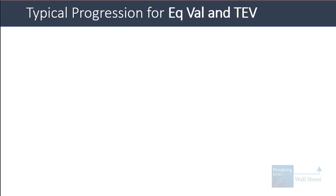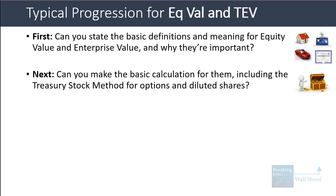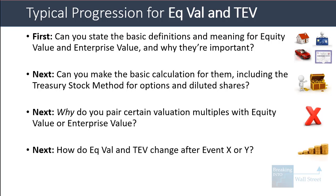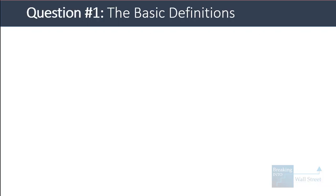The typical progression of questions starts with basic definitions and meanings of equity value and enterprise value and why they're important. Then they might ask about basic calculations, including the treasury stock method for diluted shares. They might ask about valuation multiples and how to pair equity value or enterprise value to create multiples. A more difficult category is how equity value and enterprise value change after certain events like issuing dividends, making acquisitions, or purchasing PP&E. Finally, they might ask about real-life events and how those affect equity value and enterprise value.